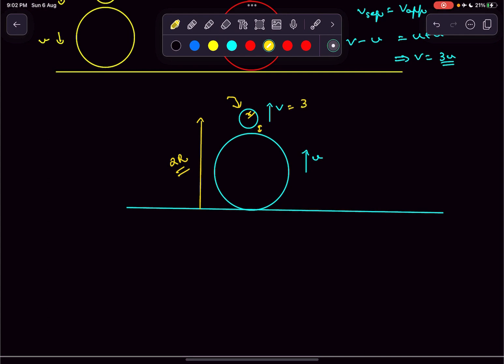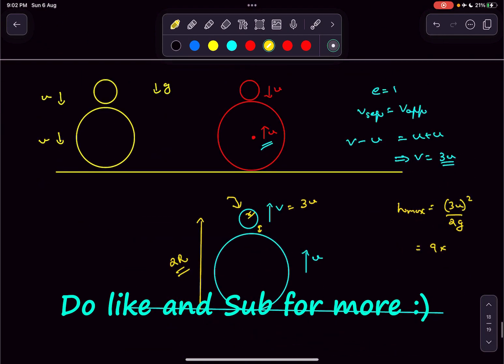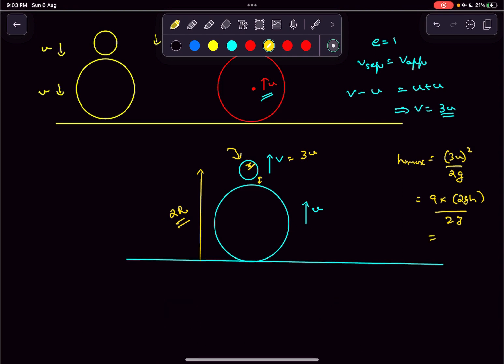And it has a velocity of 3u. Now, we know that if we throw a ball up with a velocity u, the maximum height it attains is the speed squared divided by 2g.